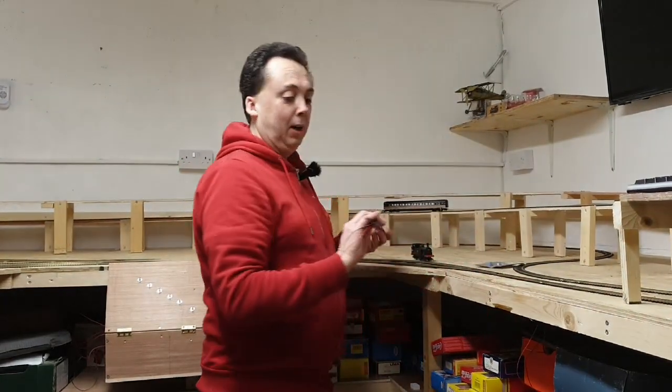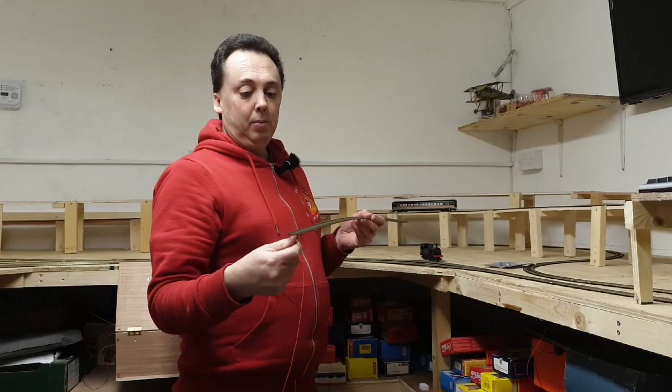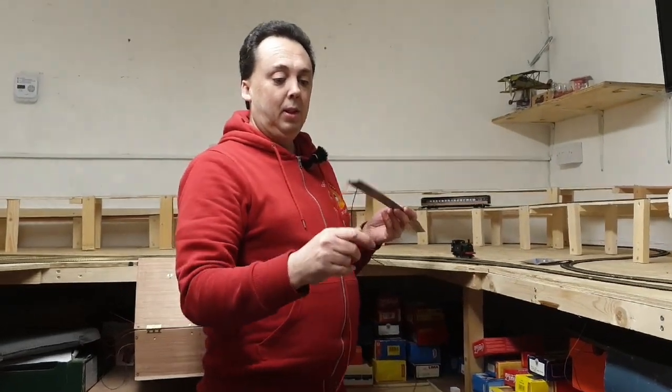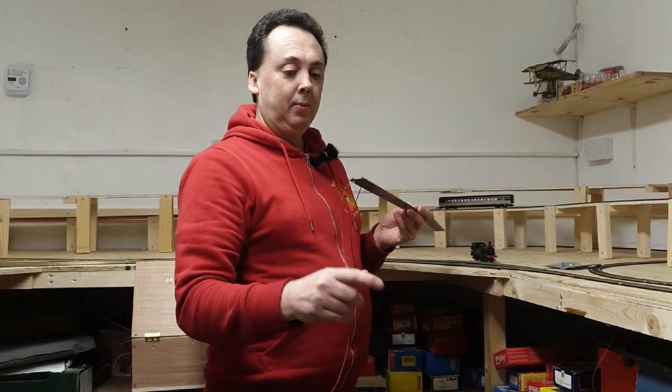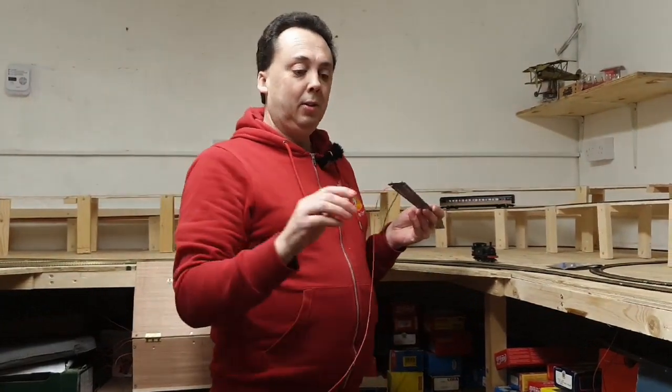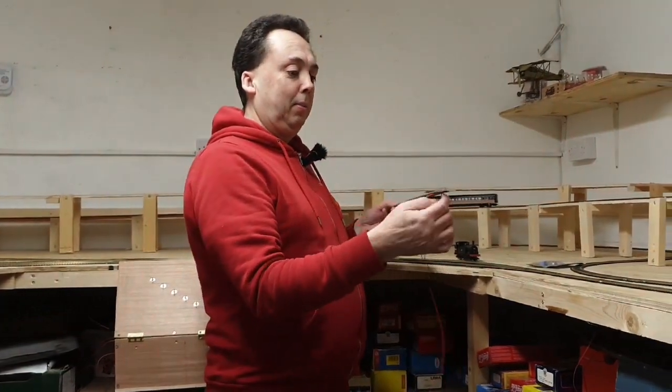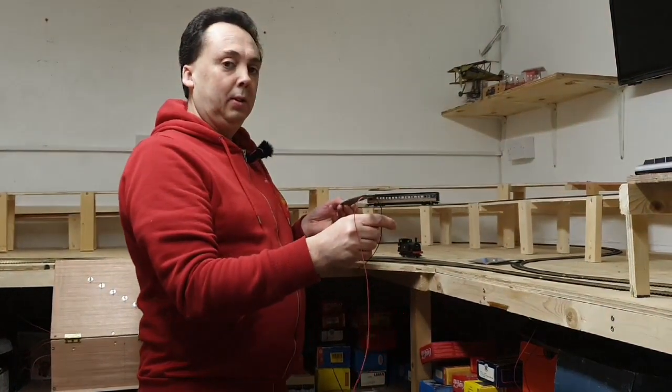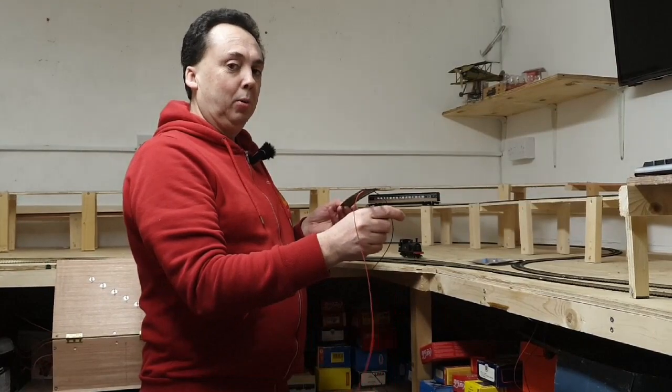So when you have your track wired up, my convention is I have red for the positive and black for the negative. On my circuit here, I keep black to the back, so I always know going around it that black, the negative wire, is towards the back.